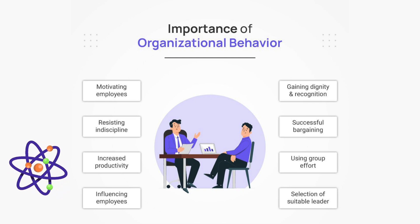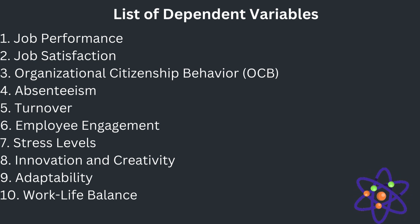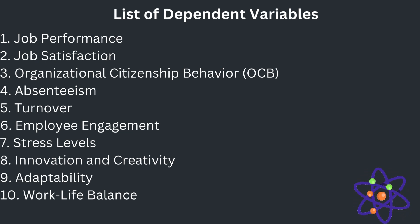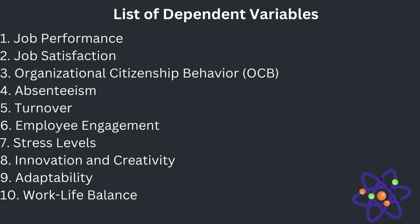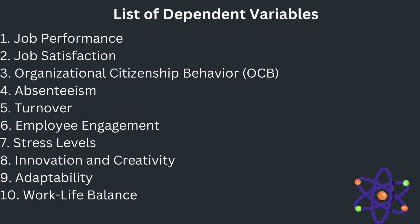The list of dependent variables in OB models: job performance — measures how well an employee performs their job duties and tasks. Job satisfaction — reflects an employee's contentment with their job and work environment. Organizational citizenship behavior (OCB) — voluntary actions that are not part of formal job requirements but contribute to the organization's functioning. Turnover — the rate at which employees leave an organization and are replaced by new hires.